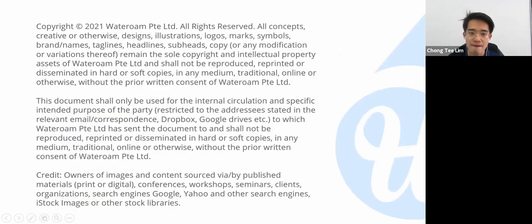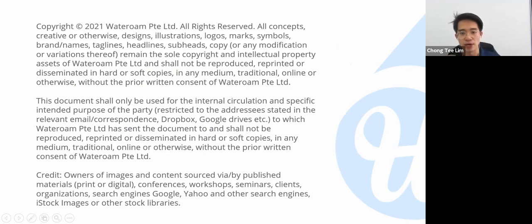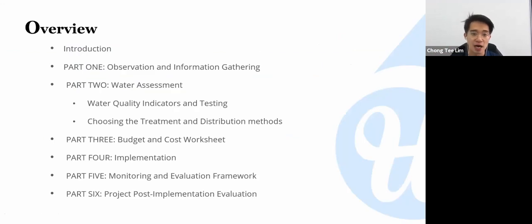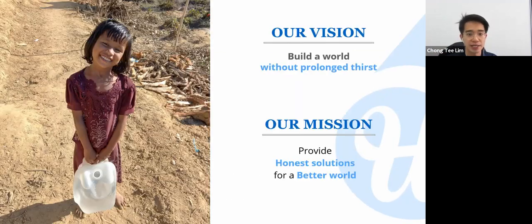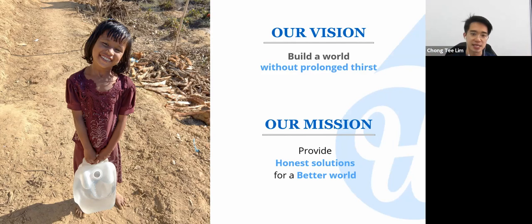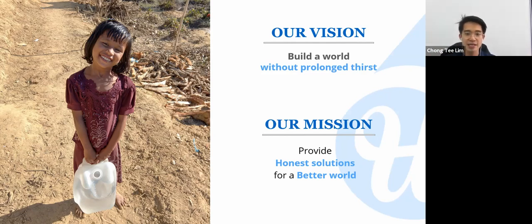A little bit about WaterRoom: we started out about seven years ago with the specific intent of tackling water issues in the area of Southeast Asia. Over the past seven years, we have implemented more than 170 projects across 38 countries. We have seen a lot of different gaps and challenges on the ground. What we want to do today is bring our knowledge and resources to you so you can plan, manage, and implement your own projects. Our company's vision is to build a world without prolonged thirst.